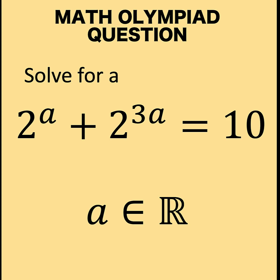Hi everyone, here is our math problem for today. This is a math Olympiad question. We are asked to solve for A, where A is an element of the set of real numbers given this equation: 2 raised to A plus 2 raised to 3A equals 10. You can pause the video and see if you can solve this math Olympiad question.